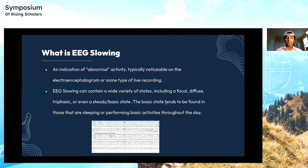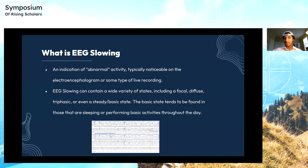What is EEG slowing? EEG slowing is an indication of abnormal activity, typically noticeable on the electroencephalogram or some type of live recording. EEG slowing can contain a wide variety of states, including focal, diffuse, triphasic, or even a steady or basic state. The basic state tends to be found in those who are sleeping or performing basic activities throughout the day.